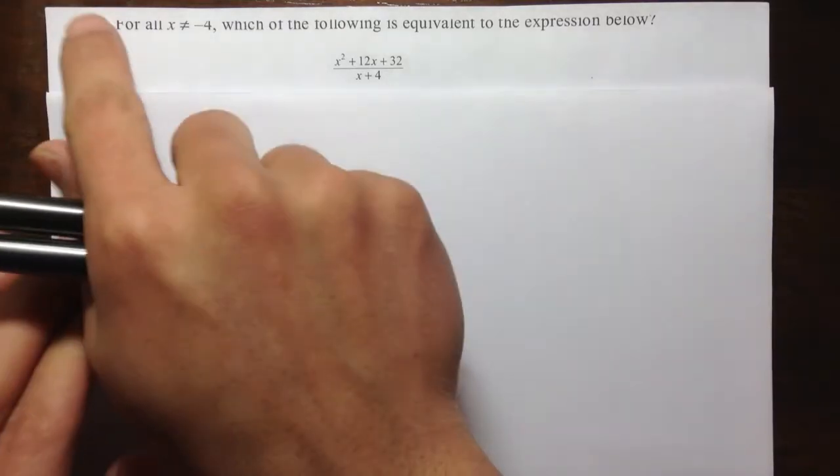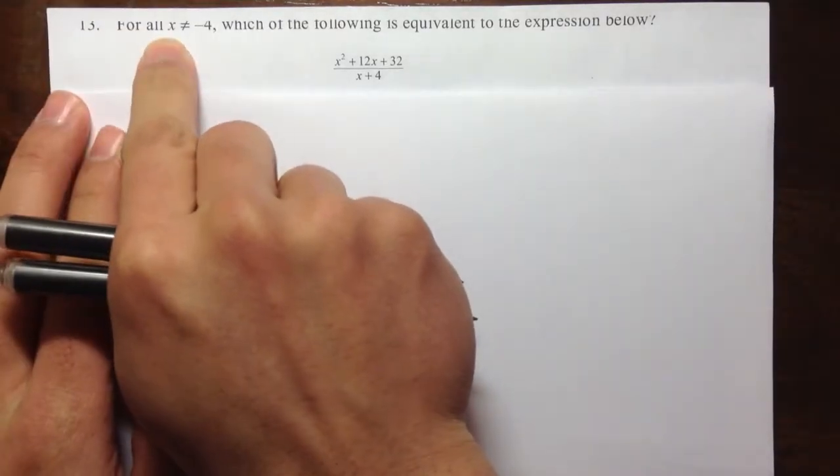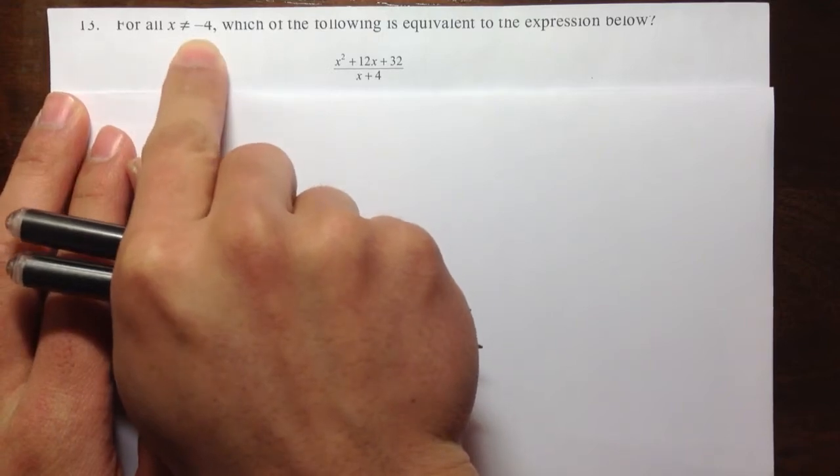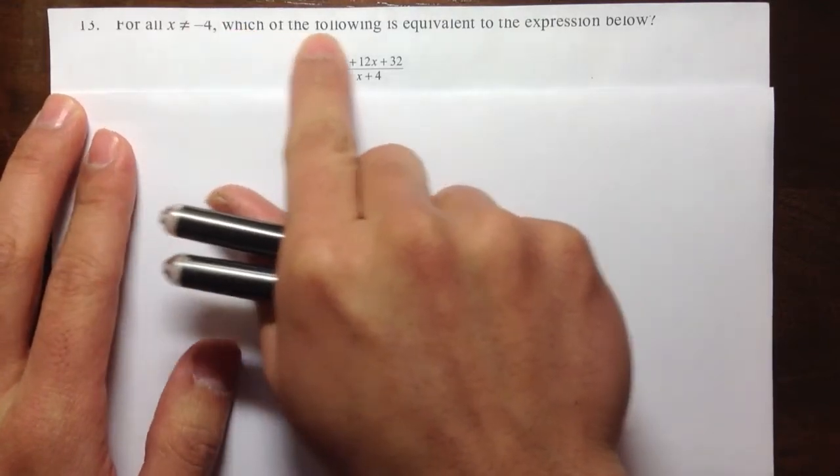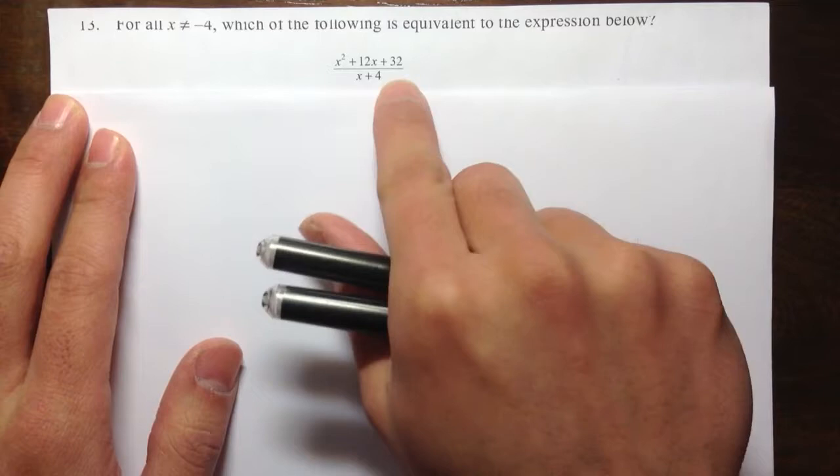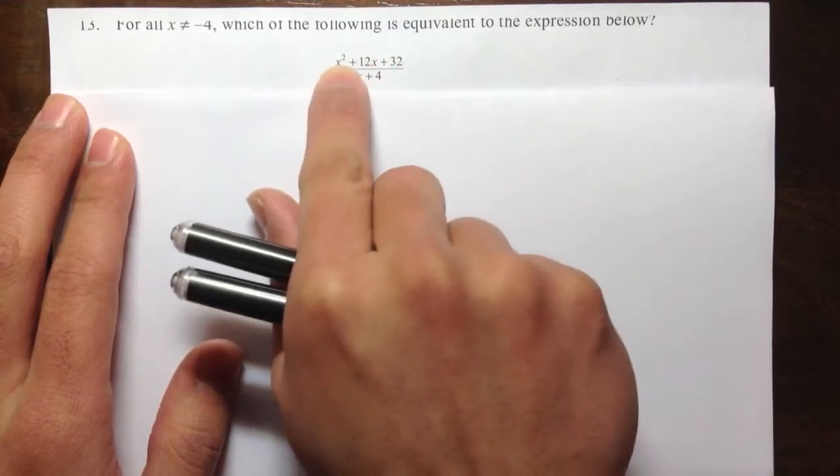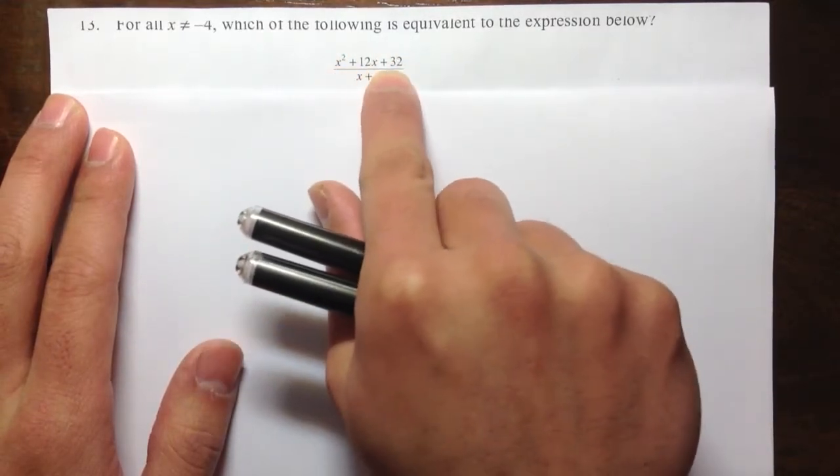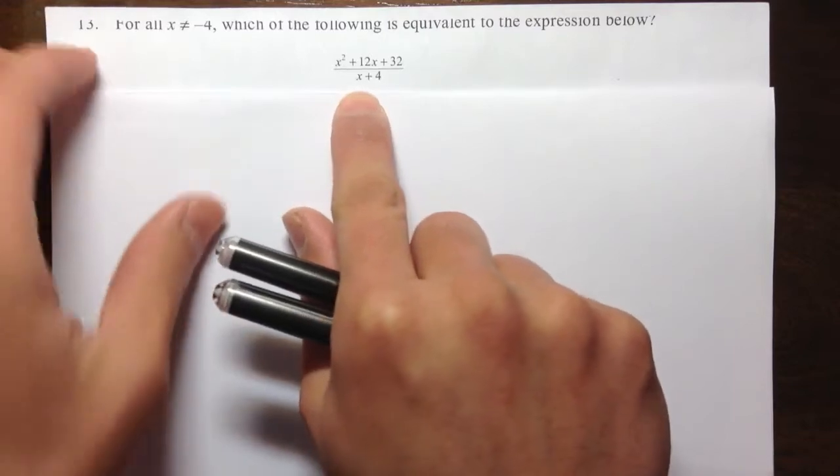Question number 13. For all values as long as x is not equal to negative 4, which of the following is equivalent to the expression below? The expression x squared plus 12x plus 32 over x plus 4.